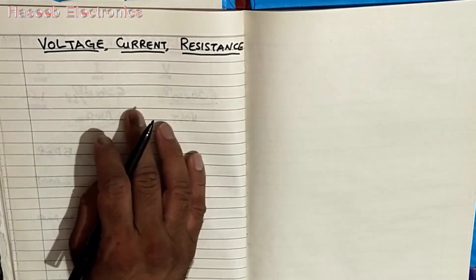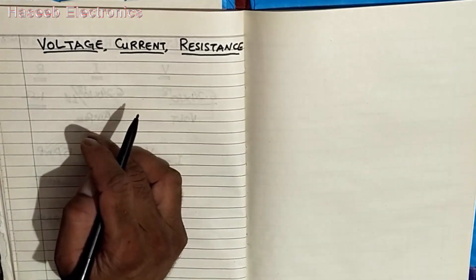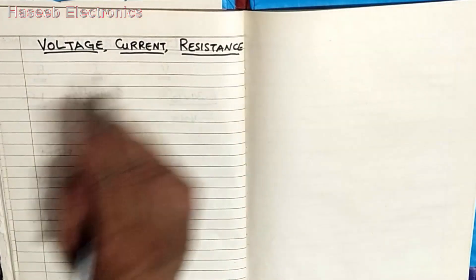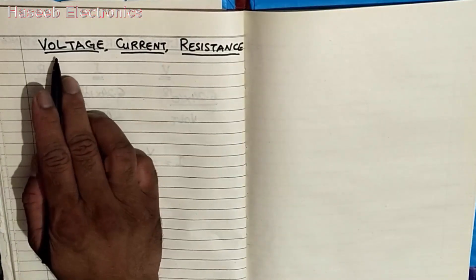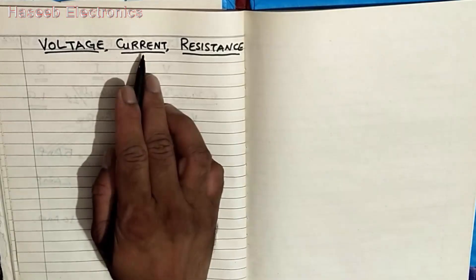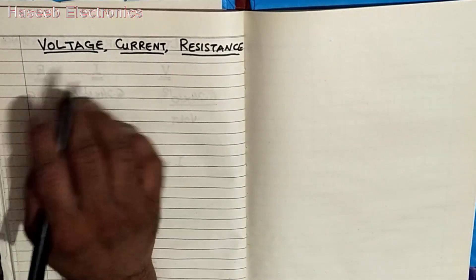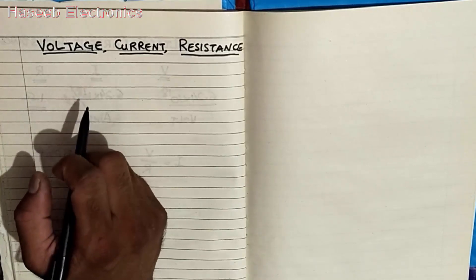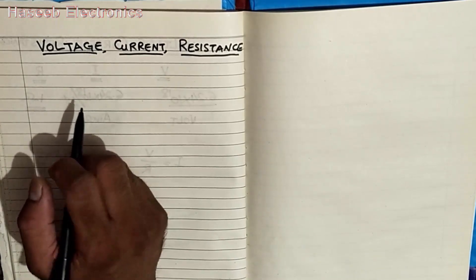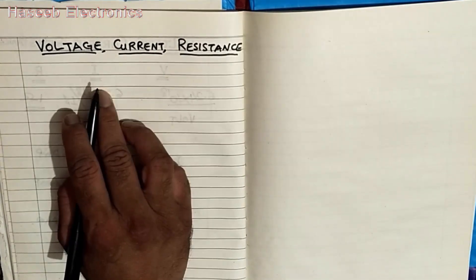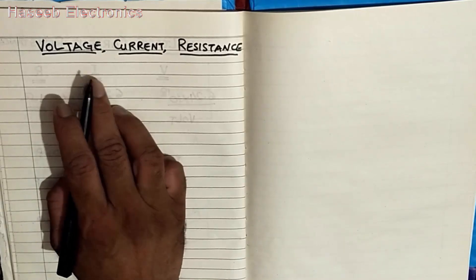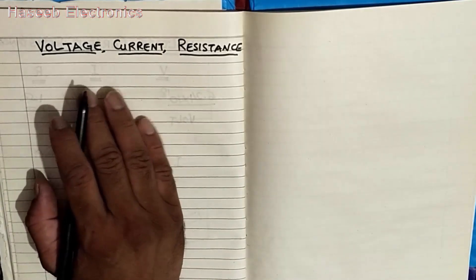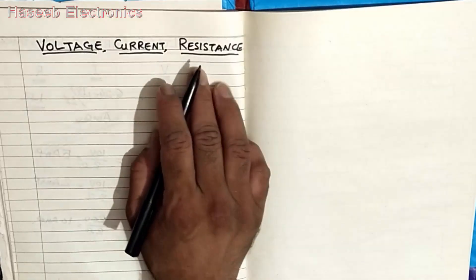Assalamualaikum warahmatullahi wabarakatuhu. Today I am going to discuss voltage, current and resistance — what is the relation between them. In our routine life we hear about 220 volt, 10 volt, 12 volt. If we discuss a battery, we say 12 volt 100 ampere battery or 12 volt 40 ampere battery. Then we have resistance.